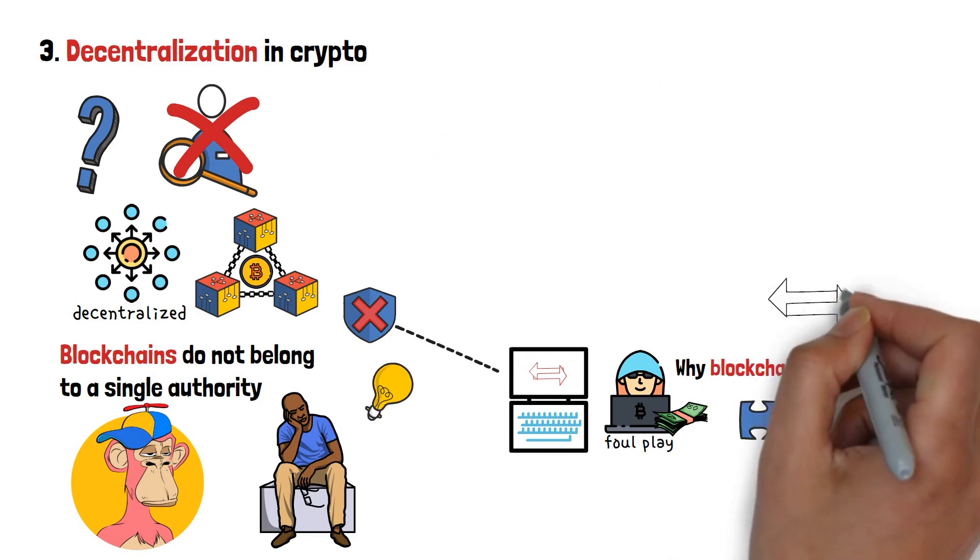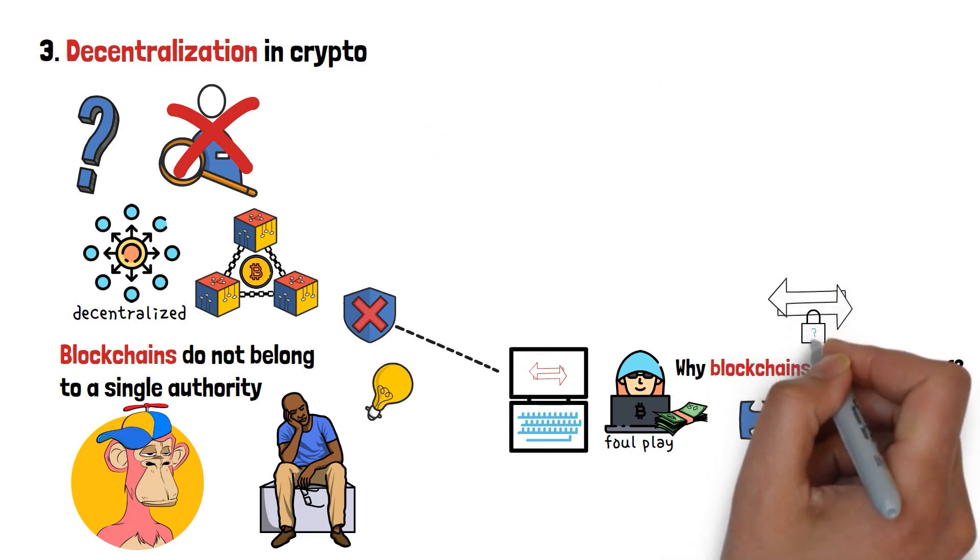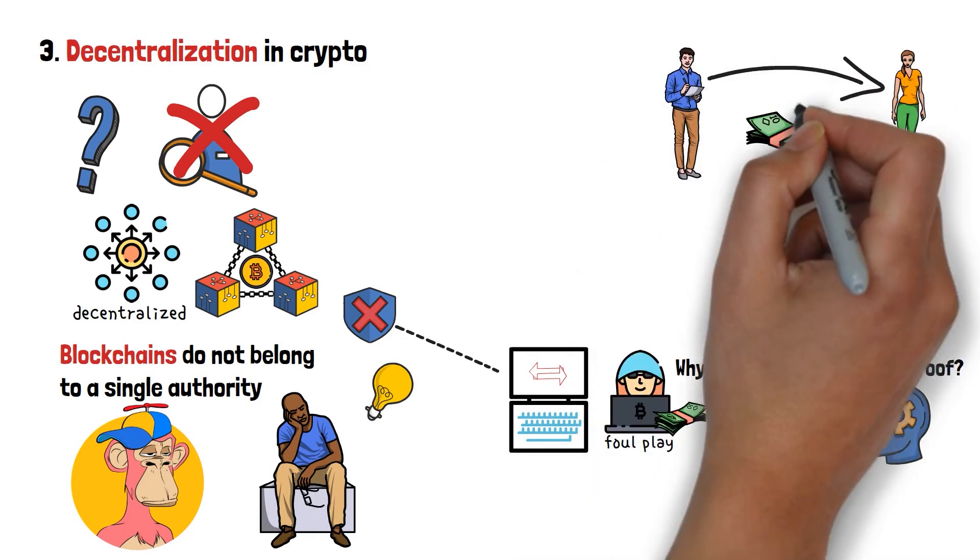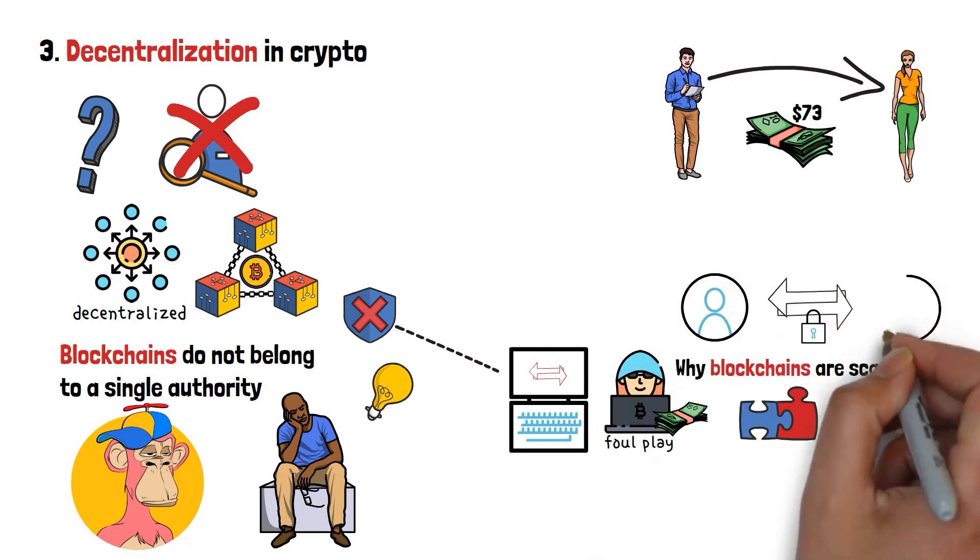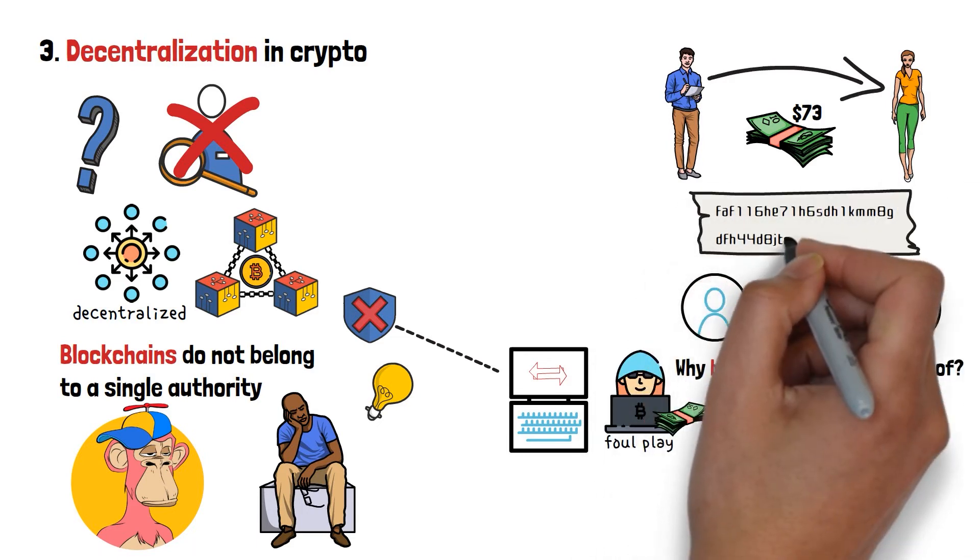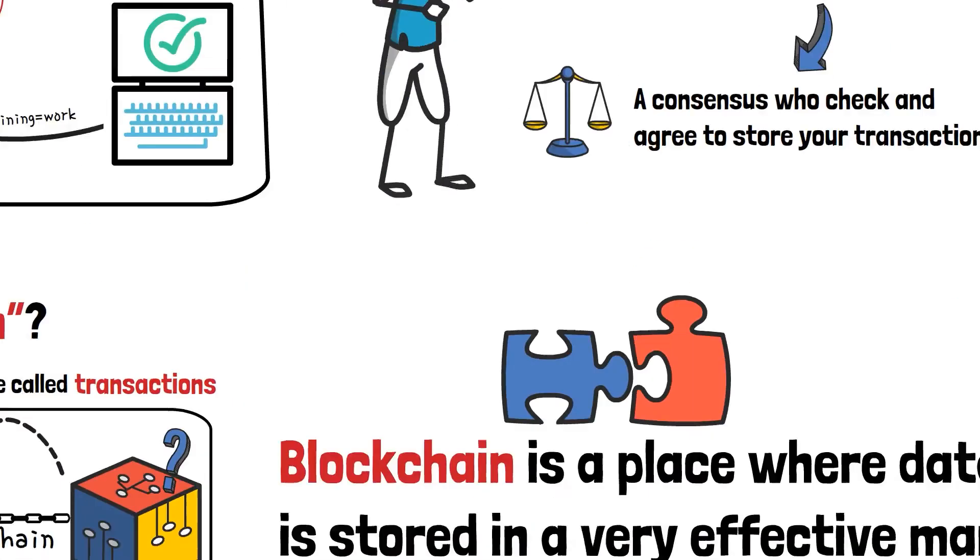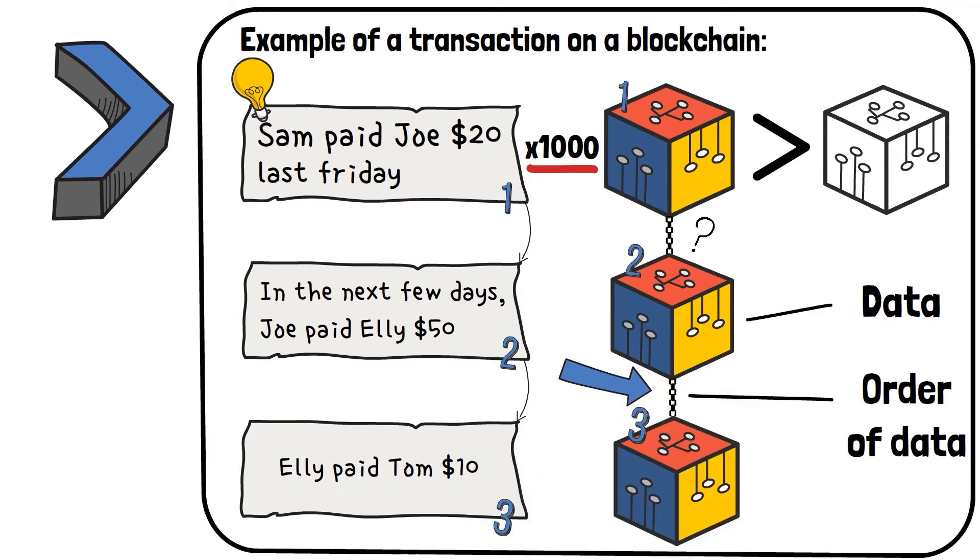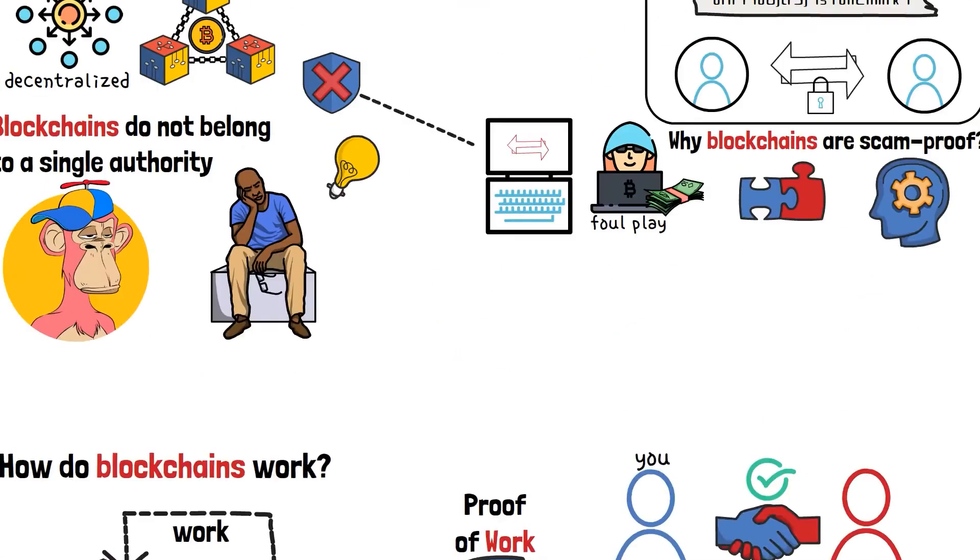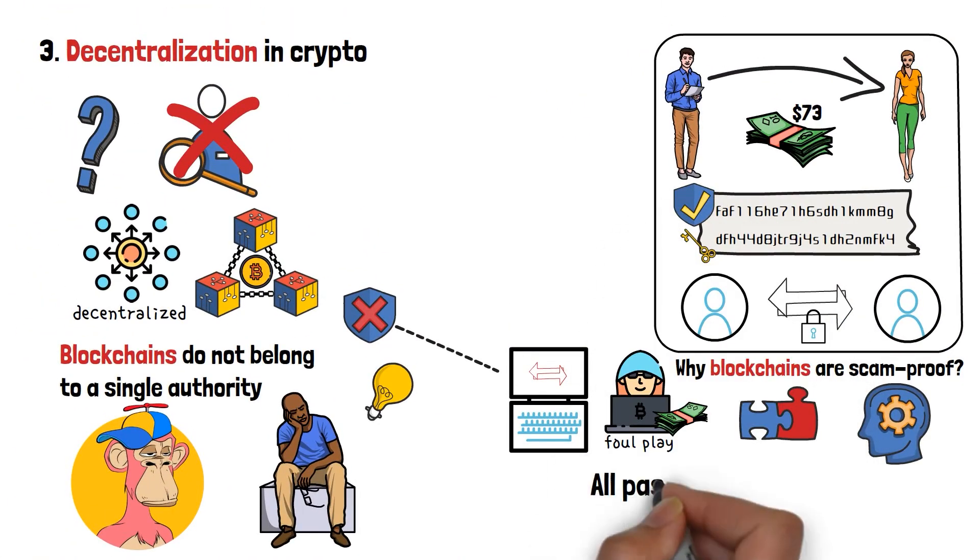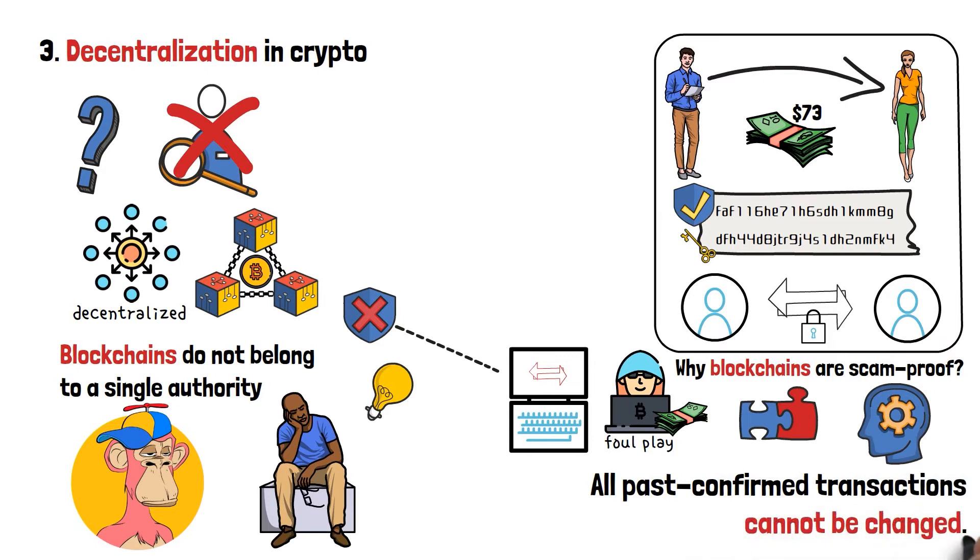All transactions happening on the blockchain are encrypted. This means that, say, when Sam pays Ellie $73, this payment is anonymous on the blockchain, and is displayed in a sequence of numbers and letters. Following that, remember the chain part in blockchain? And how it helps keep the information, or transaction data, chronological? Well, in essence, due to the encryption and security features behind blockchains, all past confirmed transactions cannot be changed.